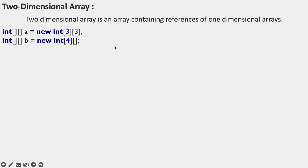A two-dimensional array is nothing but an array containing references of one-dimensional arrays. We can declare a two-dimensional array using two square brackets: int[][] a = new int[3][3]. The first value, 3, tells how many one-dimensional array objects will be stored — this two-dimensional array A will store three single-dimensional array objects. For int b = new int[4], it can store four single-dimensional array objects. In the second bracket, if you don't define the size it's also not a problem, but it is always recommended to define the size in the first square bracket.